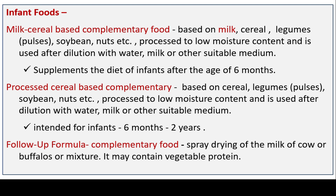Milk cereal-based complementary food is based on milk, cereal, legumes, soybean, nuts, etc., processed to low moisture content and used after dilution with water, milk, or other suitable medium. It supplements the diet of infants after the age of six months. Processed cereal-based complementary food is also based on cereal, legumes, soybean, nuts etc., processed to low moisture content, and intended for infants from six months to two years. Follow-up formula is made by spray drying of milk of cow or buffalo or mixture and may contain vegetable protein.